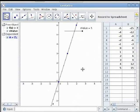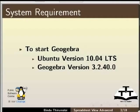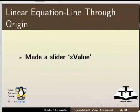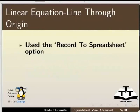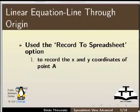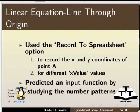To summarize: we made a slider x_value, we drew a point A with coordinates x_value and 3 times x_value, we used the Record to Spreadsheet option to record the x and y coordinates of point A for different x values, and we predicted and input the function by studying the number patterns. Now on to the second part of the lesson.